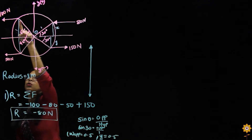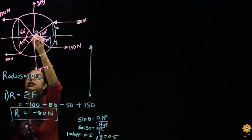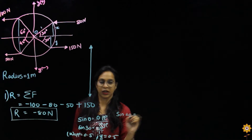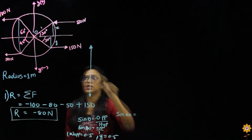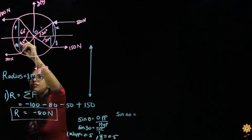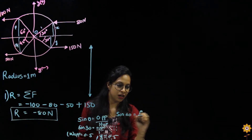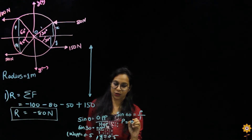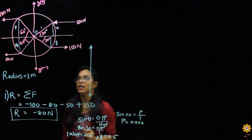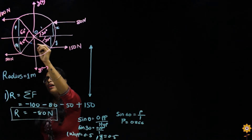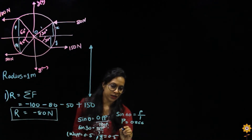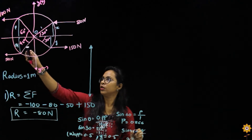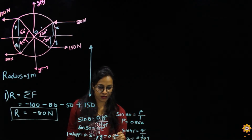Now for the 100 Newton force: considering that triangle, we have 60 degrees and the hypotenuse is one. So sine 60 equals p over one, giving p equal to 0.866 meters. For the next distance q, we have 45 degrees and the hypotenuse is one. So sine 45 equals q over one, giving q equal to 0.707 meters. All distances are in meters.